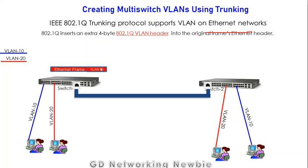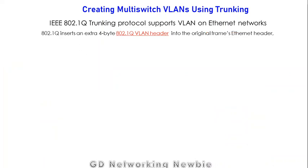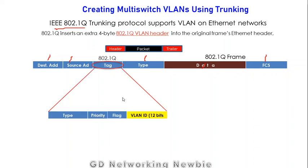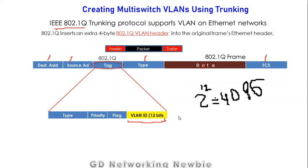Let's look at what is in the header added by this protocol. Here is a normal Ethernet frame, and here is the frame after the extra header is added. The original fields — destination, source address, type, data, and FCS — come from the normal Ethernet frame. The protocol adds a tag field, which contains further sub-fields: type, priority, and flag. Most importantly, the VLAN ID field is 12 bits in length, meaning we can have 4096 different VLAN ID numbers.